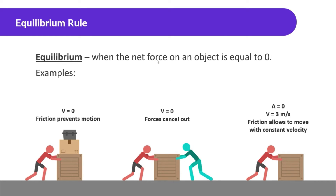Equilibrium rule: when the net force on an object is equal to zero, that's equilibrium. When the velocity of an object is zero, even though someone is pushing on it with a force applied, a force of friction is keeping it from moving — so it's in equilibrium because the force applied and the force of friction are canceling each other out. Same with force of gravity and the normal force — everything is canceling out.